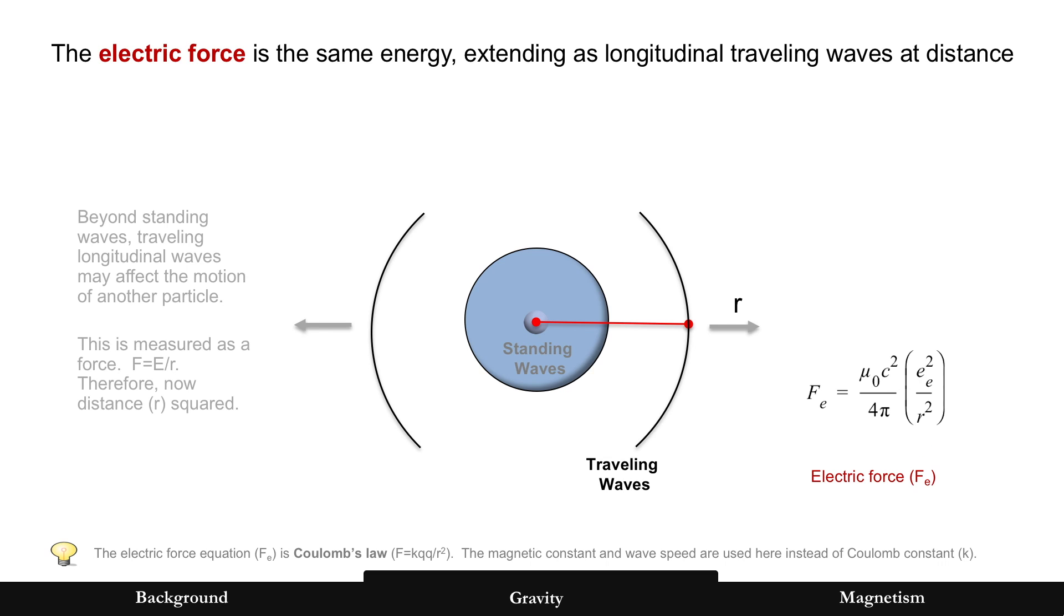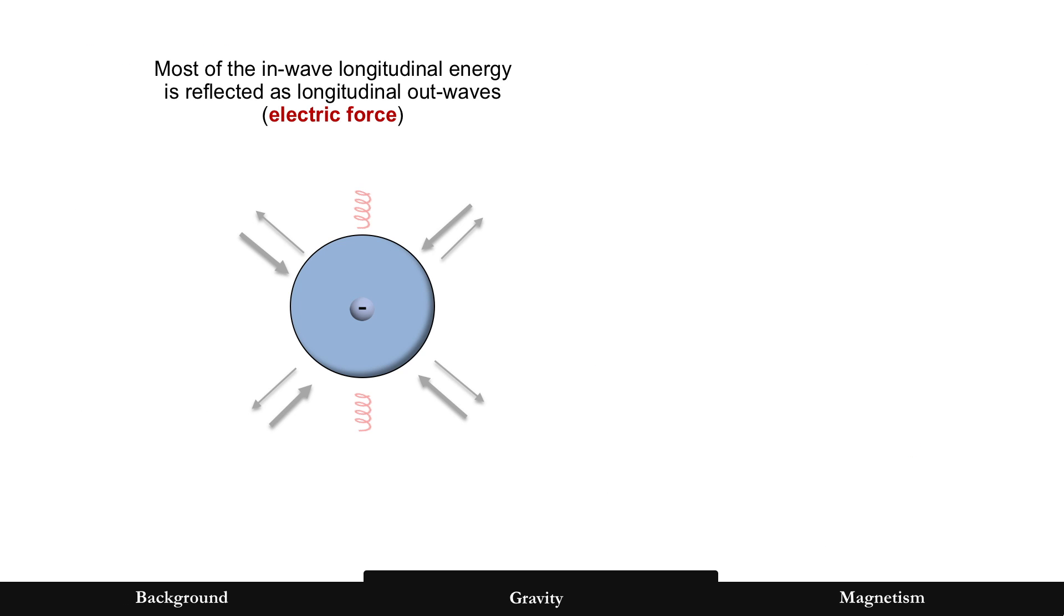You might be more familiar with it as Coulomb's law, f equals kqq over r squared. But that is the exact same thing. The magnetic constant is used here because of the previous page, as you can see, to separate energy and mass. But to the left of those parentheses, magnetic constant and c squared divided by 4 pi is the Coulomb constant. And then what you see there is the elementary charge. It's just for two particles. But of course, Q is the number of particles times the elementary charge. So that is Coulomb's law, just shown in a different way.